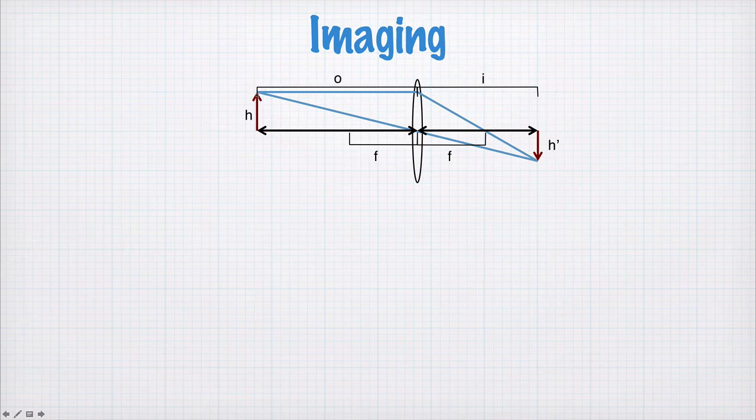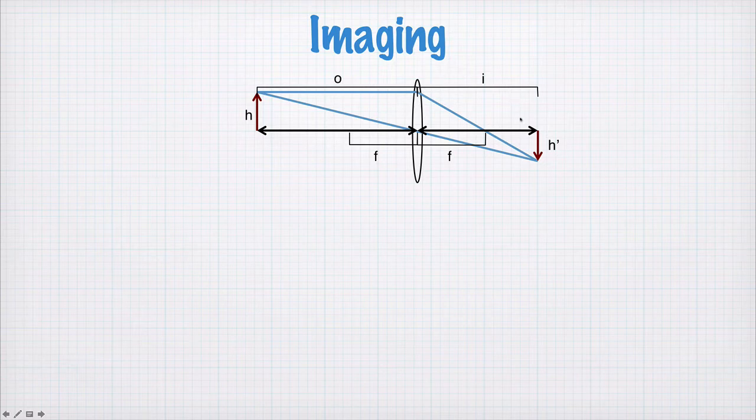O is the distance between the object and the lens. I is the distance between the lens and the image. And F is the focal length.